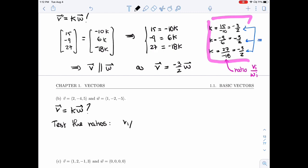So V1 over W1, that would be 2 over 1. That's 2. So for this equation here to be true for the first component, I'd have to take K equals 2.